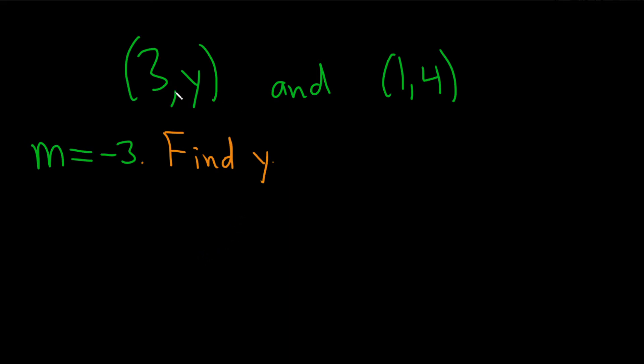In this problem, we have two points on a line: (3, y) and (1, 4). And we're actually given the slope of the line, and we have to find y.